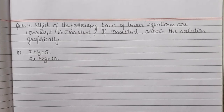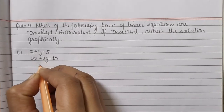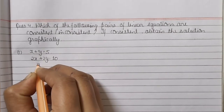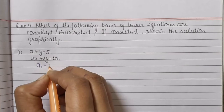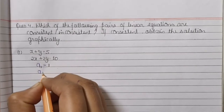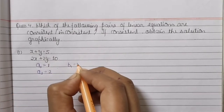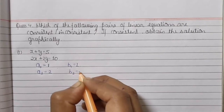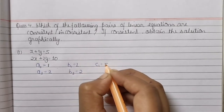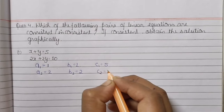Now we will find out a1, a2, b1, b2. a1 equals to 1, a2 equals to 2, b1 equals to 1, b2 equals to 2, c1 equals to 5, and c2 equals to 10.